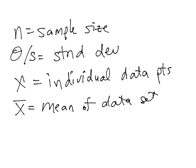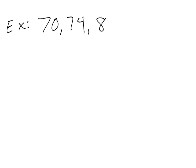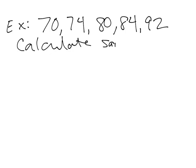Now let's get into our example, which we are going to work through by hand using a table. For our example we'll use a small sample size of 5, and our five values are going to be 70, 74, 80, 84, and 92. With those five values, our goal is to calculate the sample standard deviation.